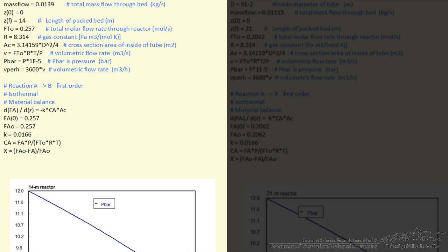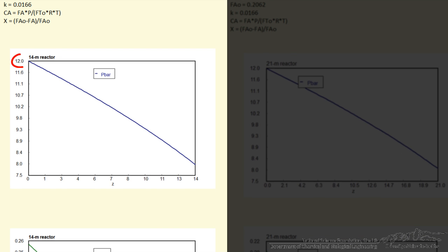And then the second part is the mass balance for a first order reaction. Just A goes to B, constant temperature. And again, I've picked values to make this comparison easy, and so what we want to look at is how the pressure drops. Comes in at 12 bar, leaves at 8 bar.